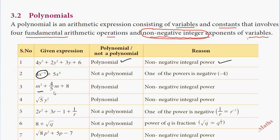This is m², m¹ — this is a polynomial. This is not a polynomial. This number has power one-half, but the variable's exponent is 2, which is a non-negative integer, so this is a polynomial.